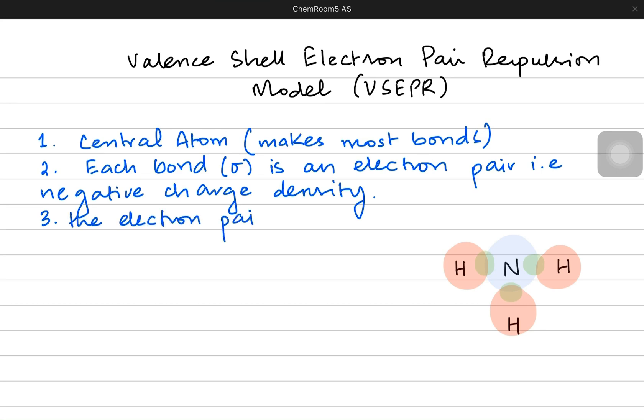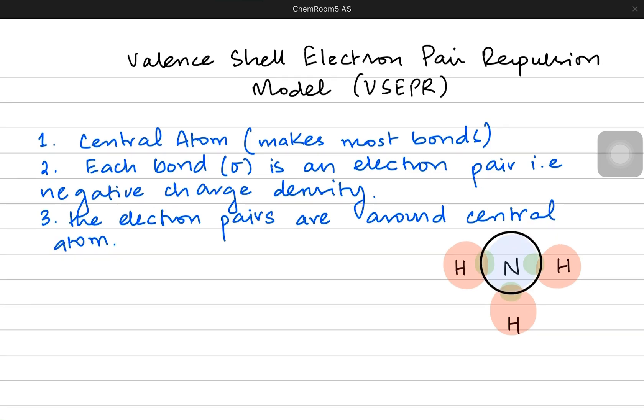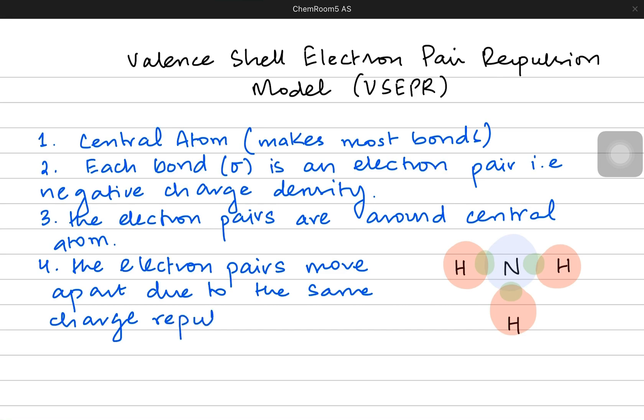So the electron pairs, because they are negatively charged, they repel each other. The electron pairs are around the central atom and they cause a repulsion around the central atom. The electron pairs move apart due to the repulsion. And by moving apart, they try to go as far as possible from each other to certain angles where the repulsion is minimum. It is all because of the same charge repulsion caused by different electron pairs around the central atom.